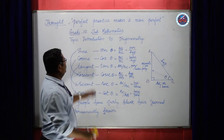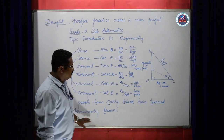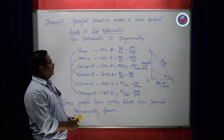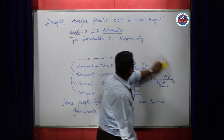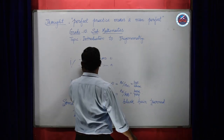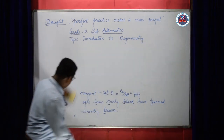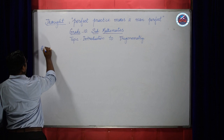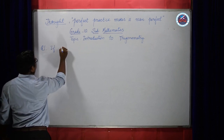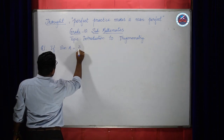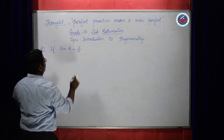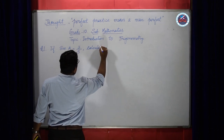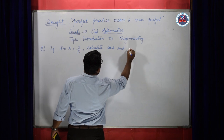So this forms the basis of trigonometry — the basic thing that you have to know. And with that, you can start doing the exercises. So let us see one question I will solve and show you. Here is the question: if sin A equals 3 by 5, calculate cos A and tan A.